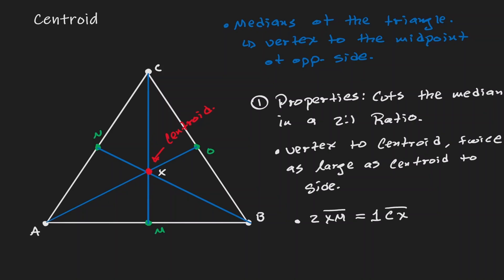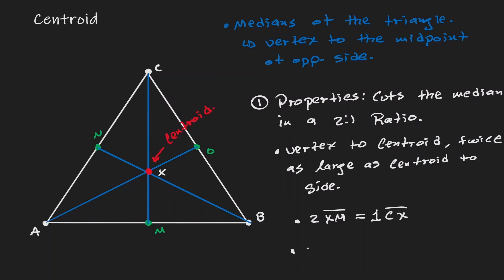Another outcome: if we consider this median and measure the distance from the vertex to the centroid, that distance is going to be twice as large as the distance from X to O. So two times XO is equivalent to one AX.